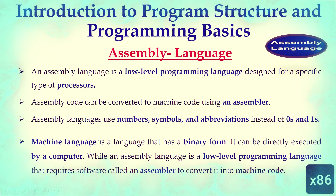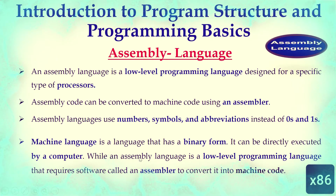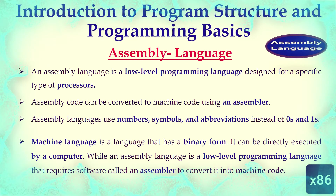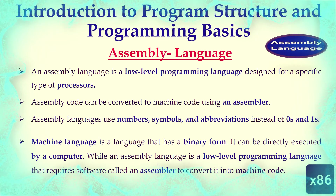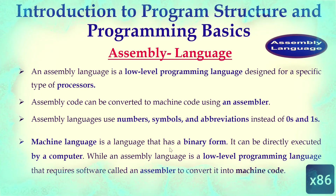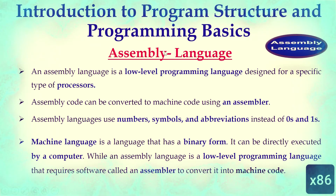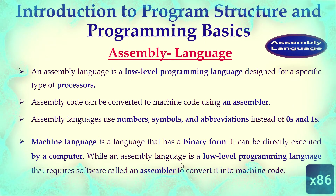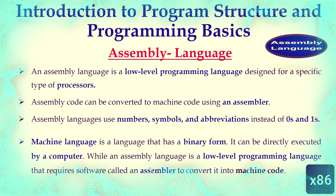Machine language is a language in binary form that can be directly executed by a computer, while assembly language is a low-level programming language that requires software called an assembler to convert it into machine code. In machine code, the combination of zeros and ones is executed directly by the CPU. In assembly language, numbers, symbols, and abbreviations must be converted to zeros and ones by the assembler.